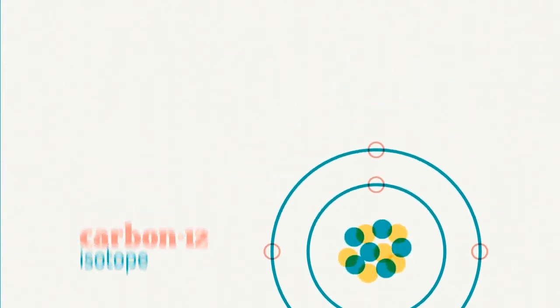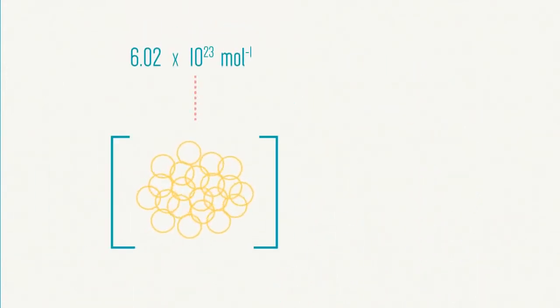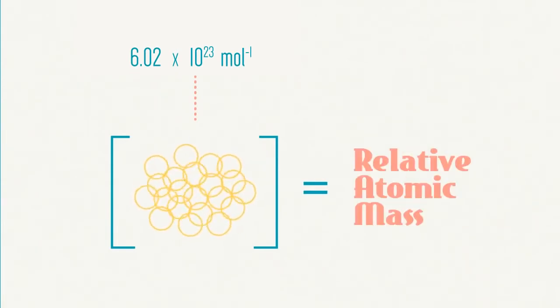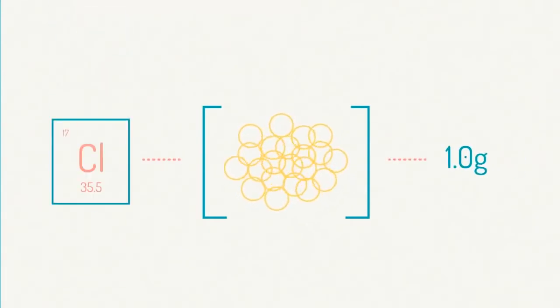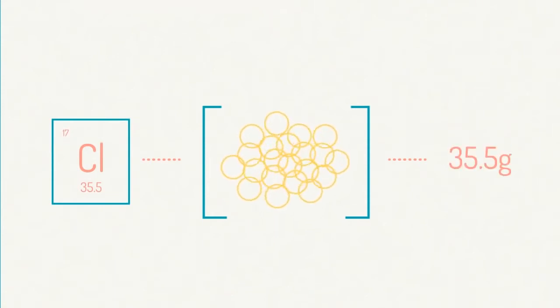For atoms, the mass of Avogadro's number of particles is equal to their relative atomic mass in grams. So, the mass of Avogadro's number of hydrogen atoms is 1 gram, and the mass of Avogadro's number of chlorine atoms is 35.5 grams.